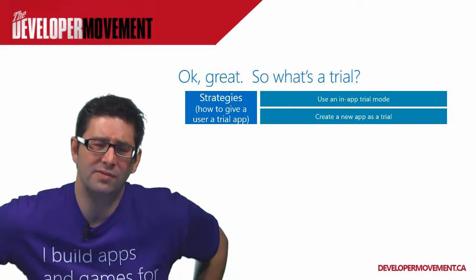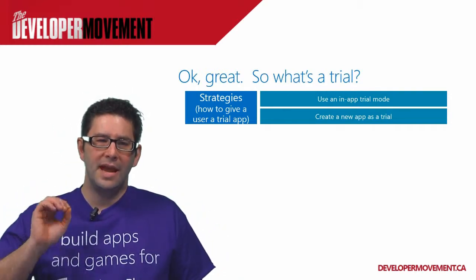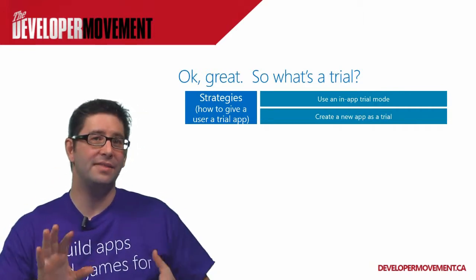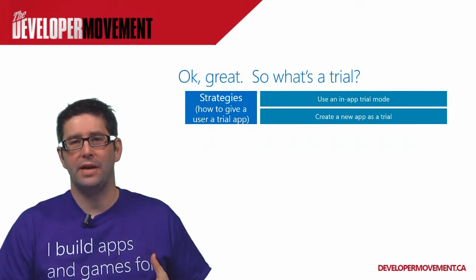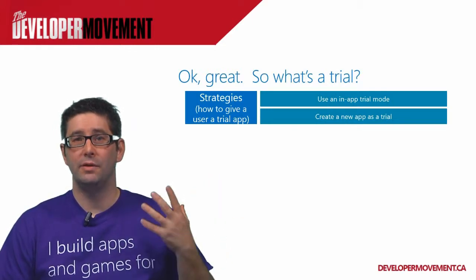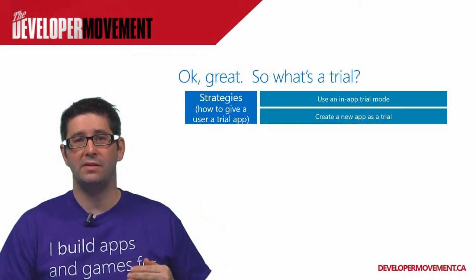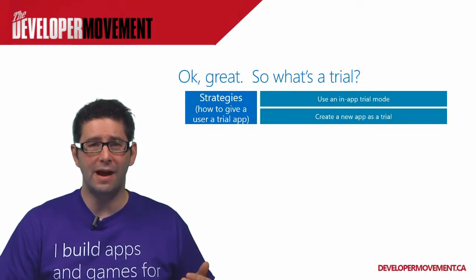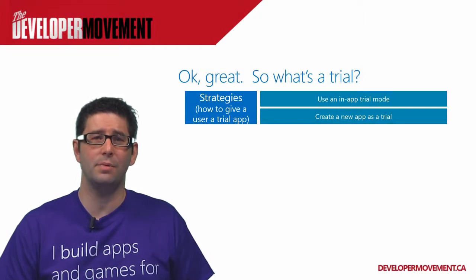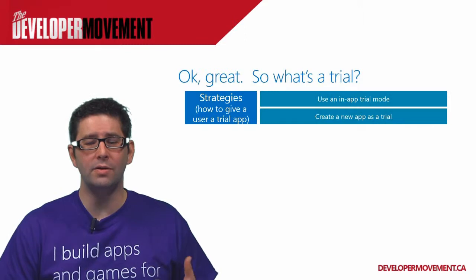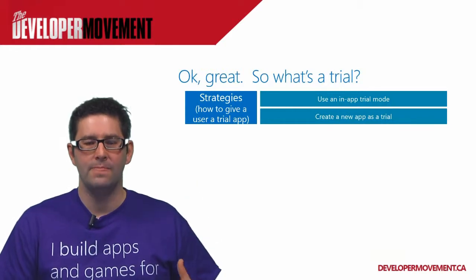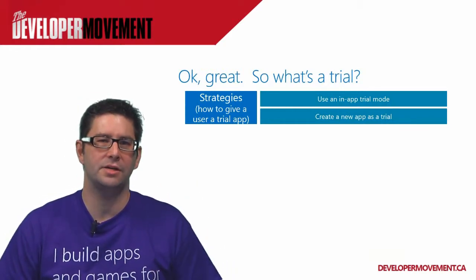I actually think the two-app approach is a bit of a fallacy. Technically and statistically, two apps is better than one from a discovery standpoint, but let's take a look at the probability of getting your application noticed within the store. The Apple App Store has 500,000 plus apps. The Windows Phone Store has 135,000 applications, and that's growing at an astronomical rate. So even if you have twice the number of apps in the store, it's still very difficult to get noticed. Why not do the right things and market your app the proper way, and use the in-app trial mode because the upsell is a whole lot easier.